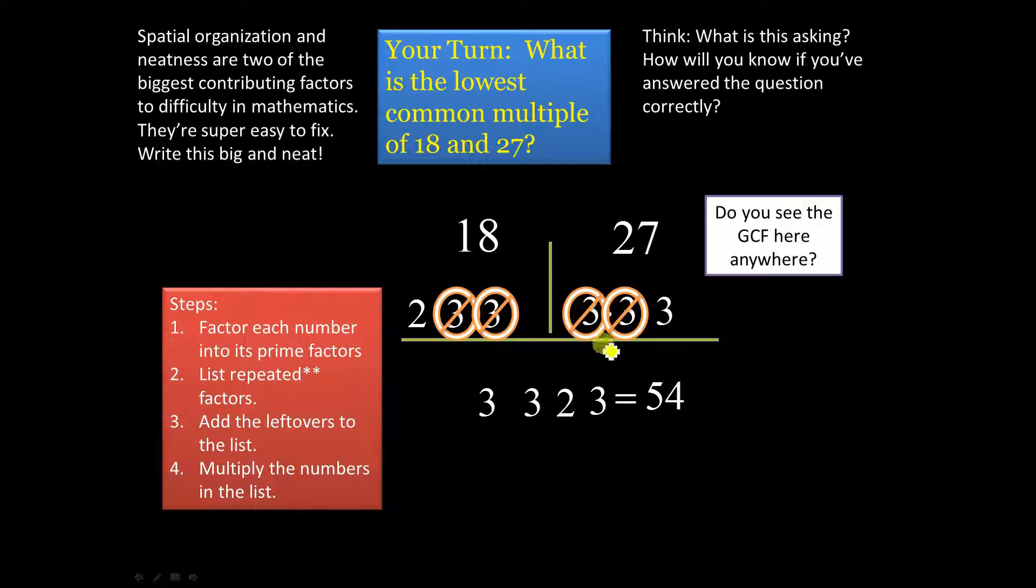Now, in our list for lowest common multiples, do you see where you can find the greatest common factor? Do you see it? Right there. Nine. Nine is the greatest common factor of 27 and 18. What they have in common is the greatest common factor. See right here? This right here would be the greatest common factor.